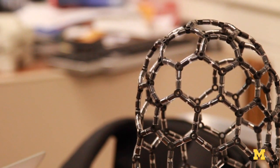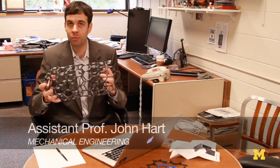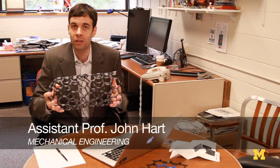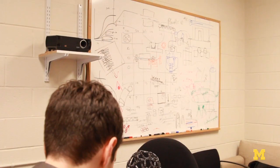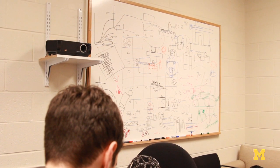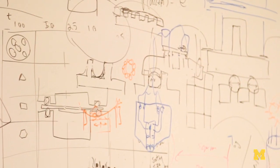That's maybe one ten-thousandth the diameter of a human hair. So nanotubes are extremely small, but they're also extremely strong and stiff and have high electrical conductivity and thermal conductivity. One of our projects working with carbon nanotubes is to build materials with new combinations of properties.